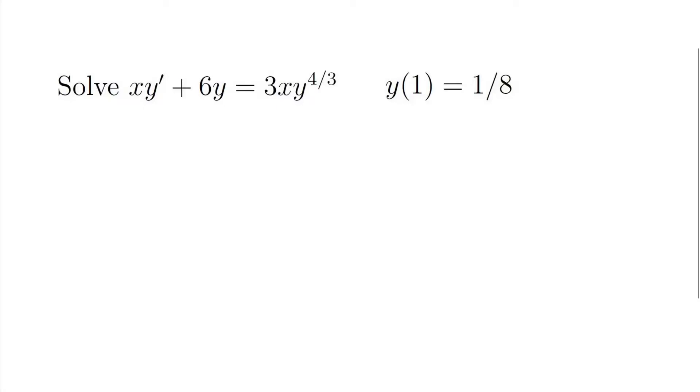Okay, so here we want to solve the initial value problem. x times y prime plus 6y is equal to 3x y to the 4 thirds, with initial condition y of 1 is 1 over 8.